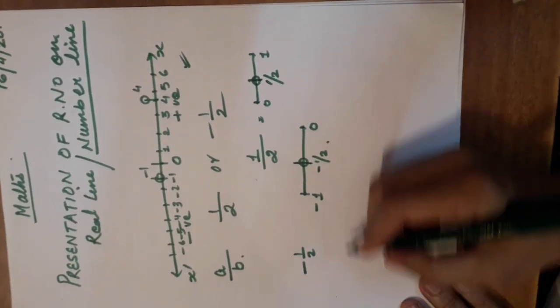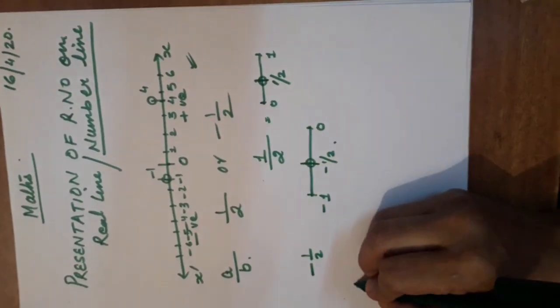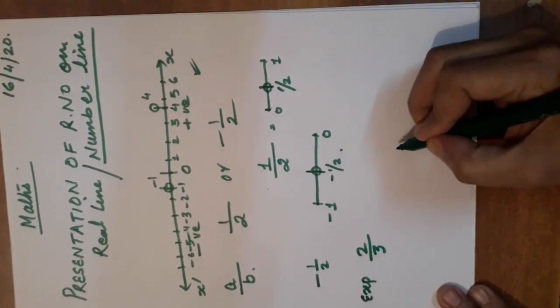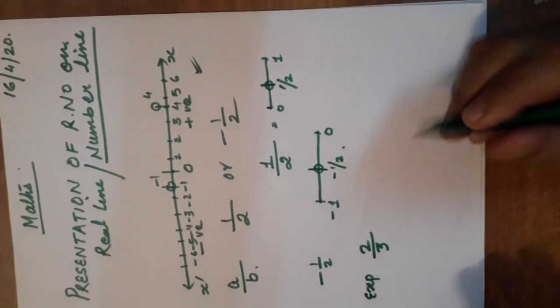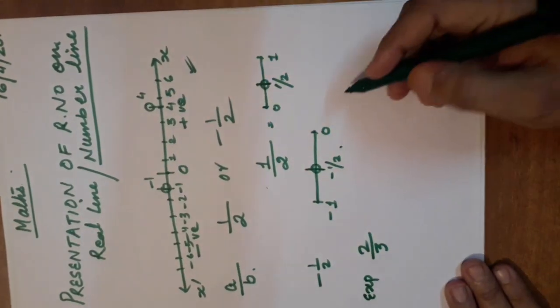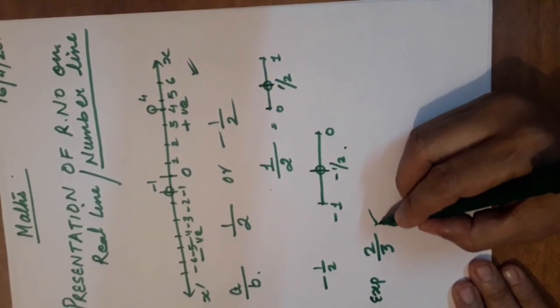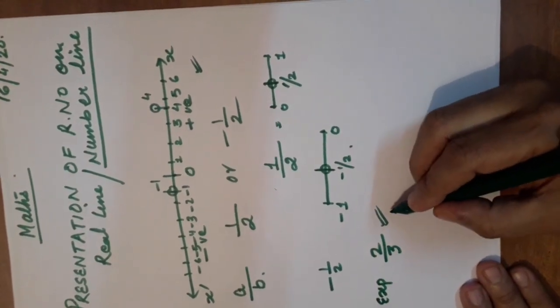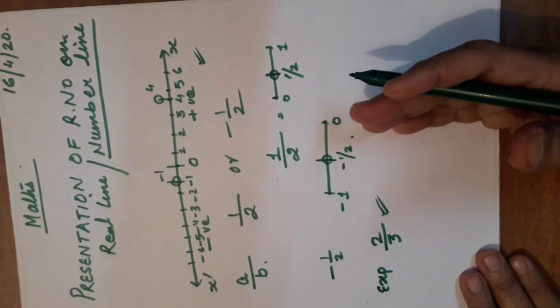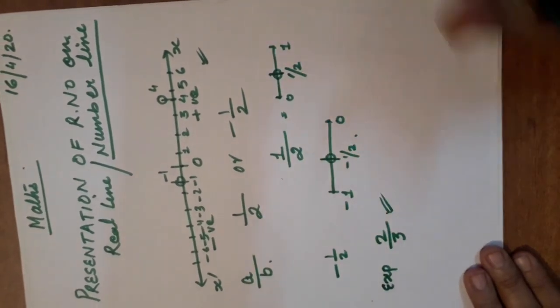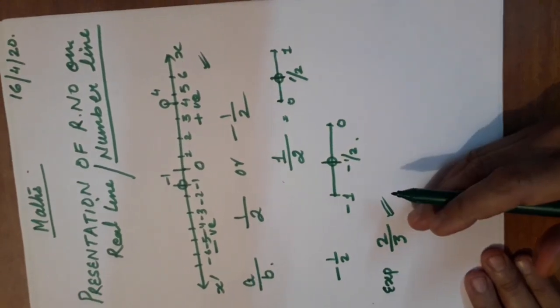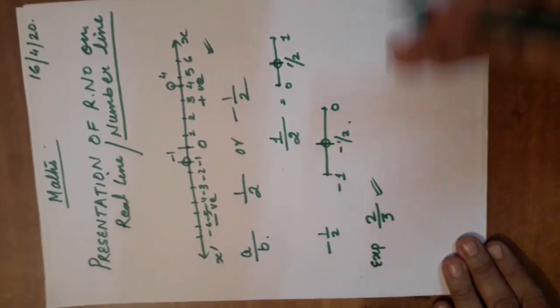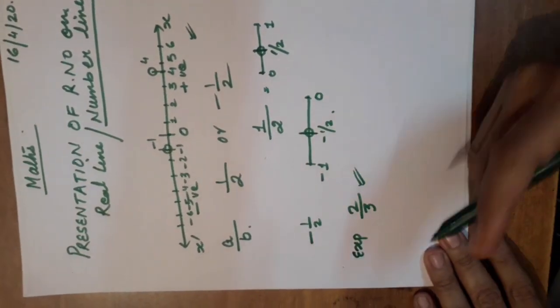One more example I would like to show. Suppose if I have to represent 2 by 3 on a number line. Okay one more thing. Before representing the number on a number line, I have to check whether the number is greater than 1 or smaller than 1. If I will make it sure that this number is greater than 1, I have to go ahead from number 1. If this number is less than number 1, then I have to be in 0, in between 0 and 1.